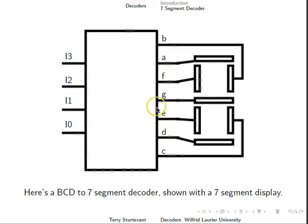Here is a BCD to 7-segment decoder shown with a 7-segment display. You notice the segments on the display are labeled from A to G in this manner.